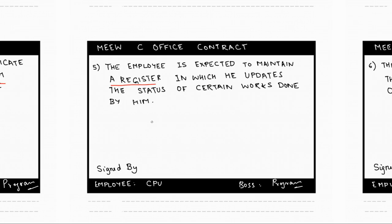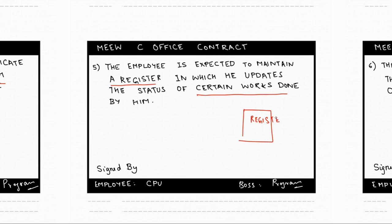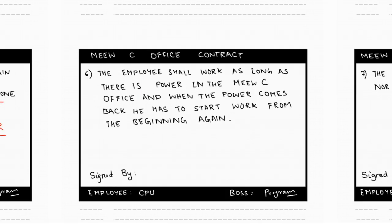The fifth term reads that the employee is expected to maintain a register in which he updates the status of certain works done by him. The boss can periodically view this register and modify it to suit his own needs. The sixth term says that the employee shall work as long as there is power in the MUC office, and when the power comes back he has to start work from the beginning again.